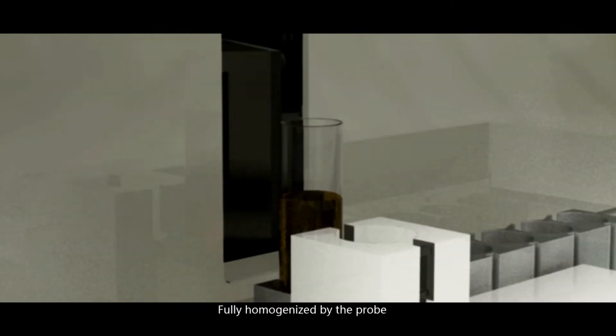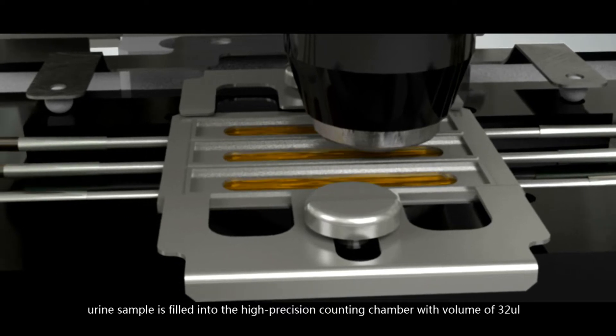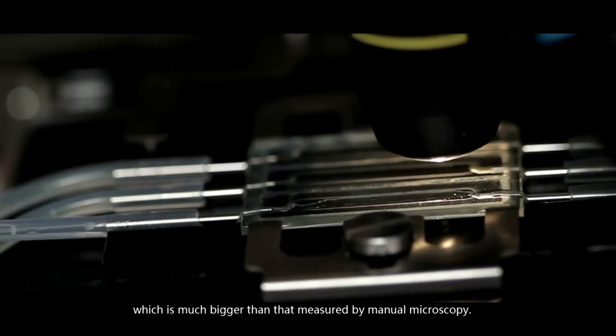Fully homogenized by the probe, urine sample is filled into the high-precision counting chamber with volume of 32 microliters, which is much bigger than that measured by manual microscopy.